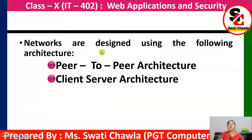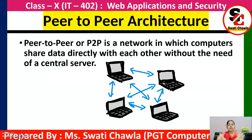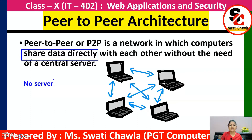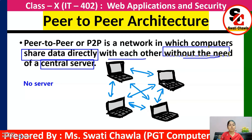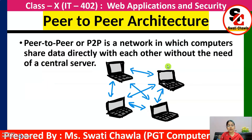Networks are designed using two architectures — peer-to-peer architecture and client-server architecture. In peer-to-peer architecture, computers share data directly with each other without the need of a central server. All computers are directly connected to one another. As you can see in the diagram, there is no central server in peer-to-peer architecture.